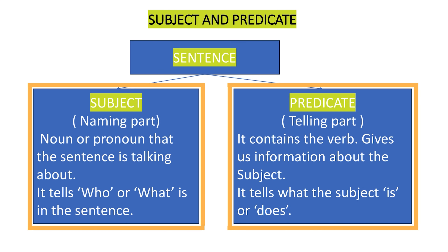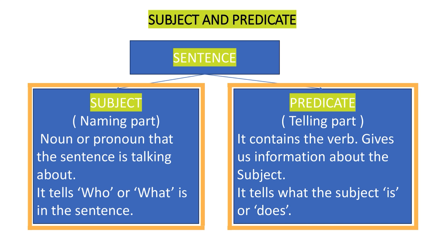The predicate part is what we call the telling part. The predicate gives us information about what the subject — that is, the noun or the pronoun — is or what it does. And most importantly, the predicate contains the verb part of any given sentence.